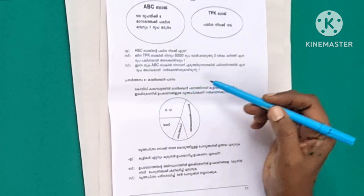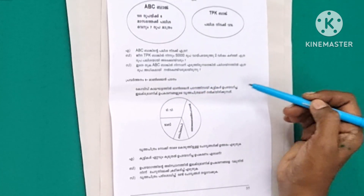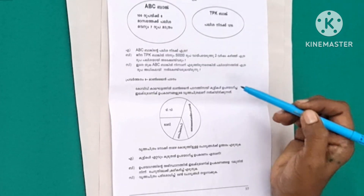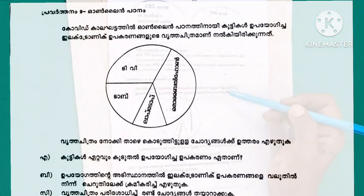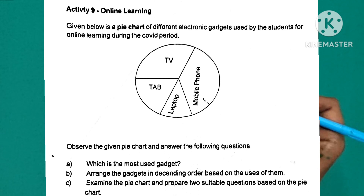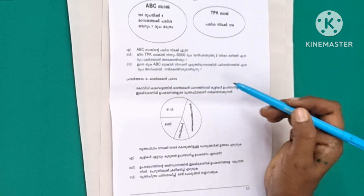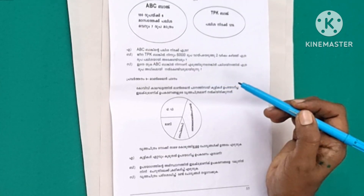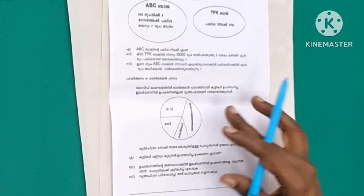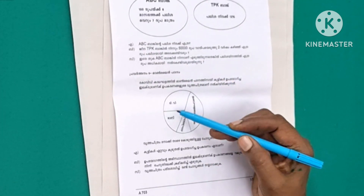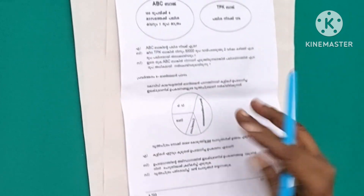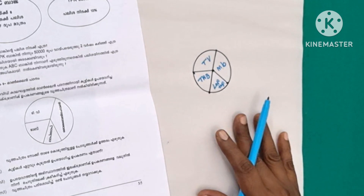In COVID-19, here is a question. Given below is a pie chart of different electronic gadgets used by students for online learning during the COVID-19 period. Look at this — here is a TV, a mobile phone, a laptop, and a tab.